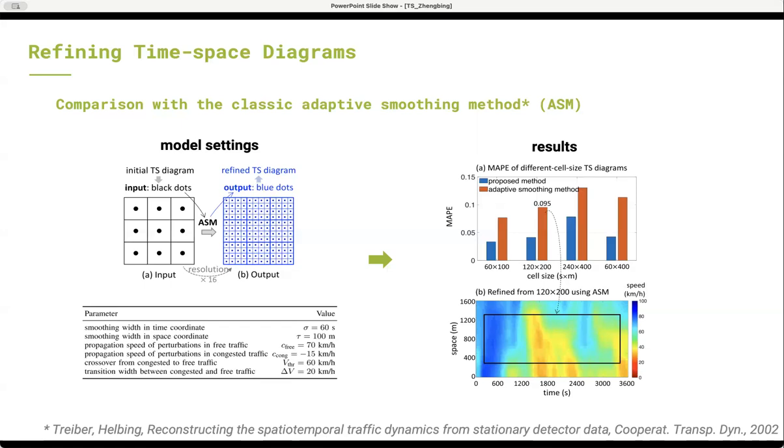It is not difficult to understand that the ASM, which is based on a continuous filter, tends to generate smooth results, making a time-space diagram look quite foggy. Therefore, based on the above comparison, we may conclude that the proposed method outperforms the ASM when refining a time-space diagram.